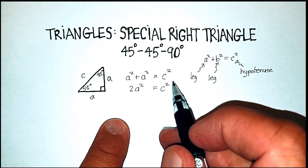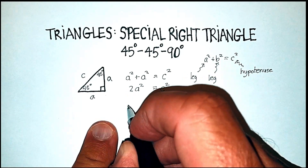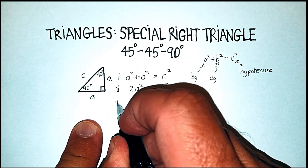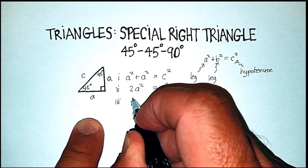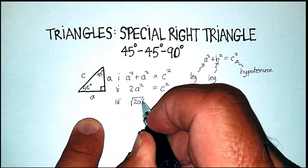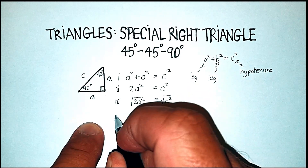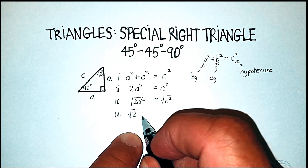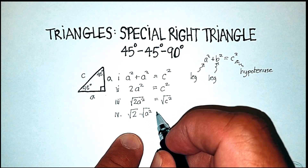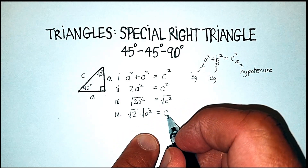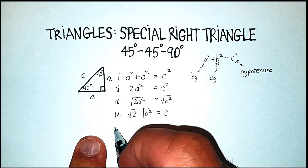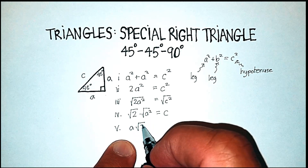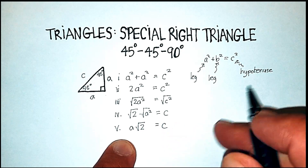We are going to take the square root of both sides. That's going to give us the square root of two times the square root of a squared, and the square root of c squared is just c. The square root of a squared is just a, so a radical two will be equal to c.